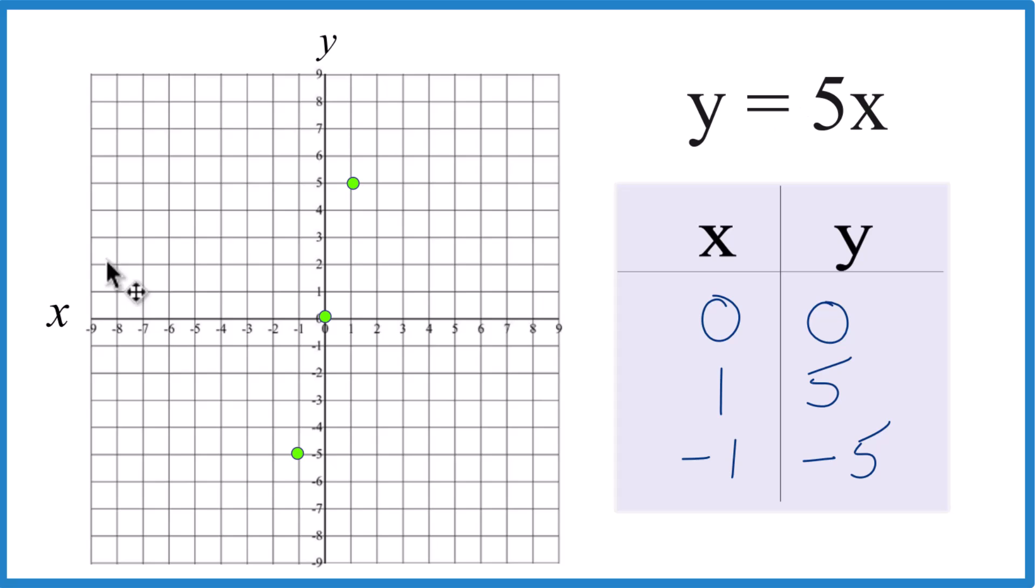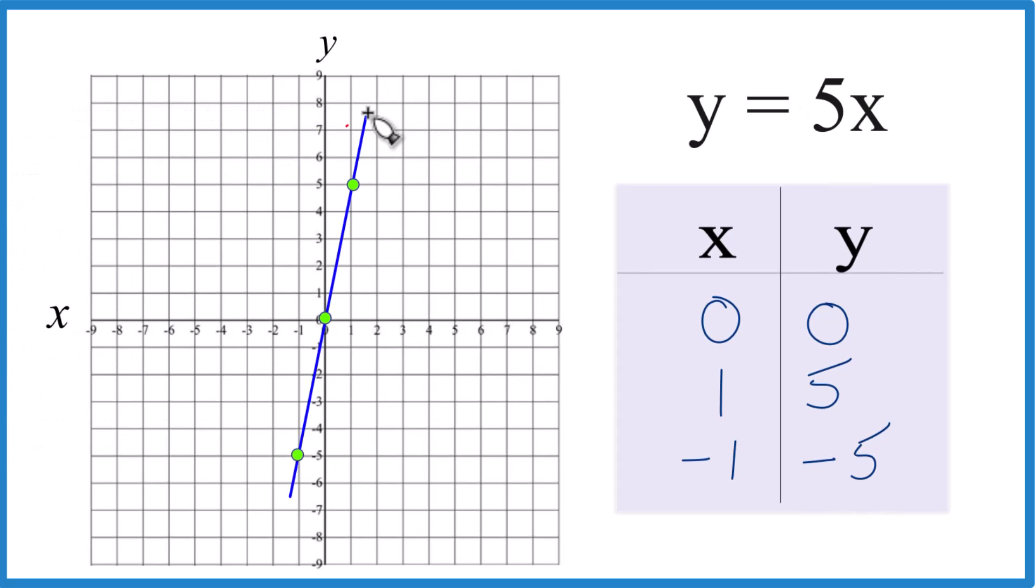And you can see these line up. You can do it with two points. I like three in case I made an error here. Let's put a line through it. Then we can put arrows, and that is the graph for the equation y equals 5x using a table of values.